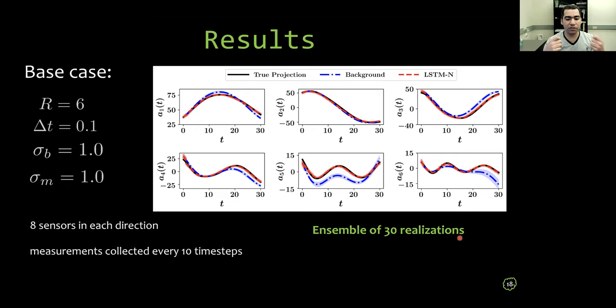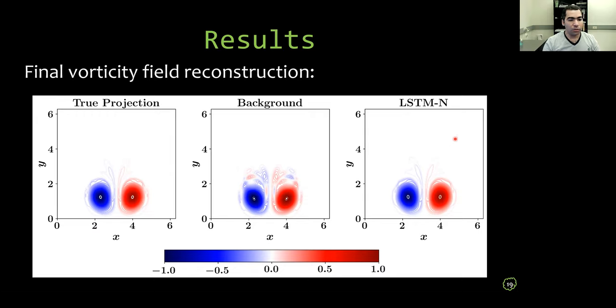And we compute the mean value and the standard deviation. So this line denotes the mean and the shaded band represents the standard deviation of the ensemble prediction. So we can see here that the LSTM nudging framework is able to recover the true projection values compared to the background. So the background here means using just only Galerkin ROM equation. For visualization, this is a reconstructed vorticity field at the final time, which here final time is 30. Again, we can see that LSTM nudging is much more accurate compared to Galerkin ROM.